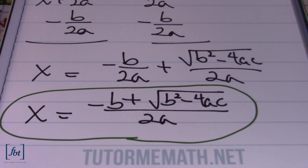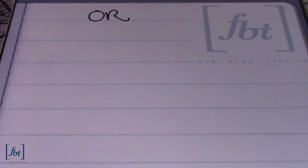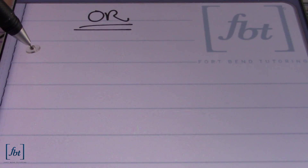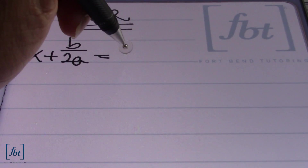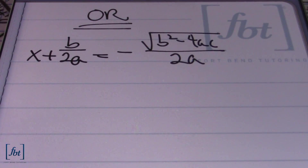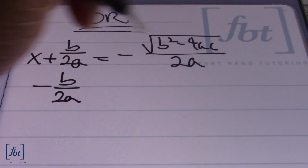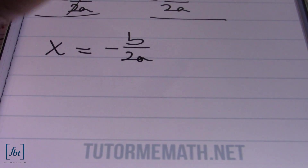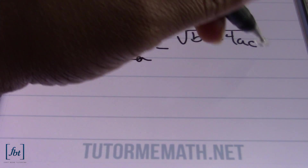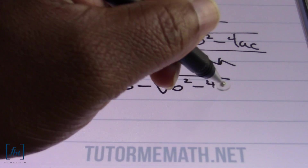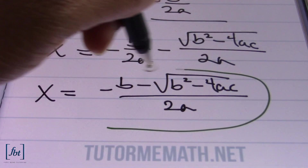Let's look at that second equation, which represents our distance to zero coming from the left of zero. Our second equation reads: x plus b divided by 2a equals negative square root of b squared minus 4ac all over 2a. Subtracting b divided by 2a from both sides gives us x equals negative b divided by 2a minus the square root of b squared minus 4ac divided by 2a. Combining like terms: negative b minus the square root of b squared minus 4ac divided by 2a. This is the other half of our quadratic formula.